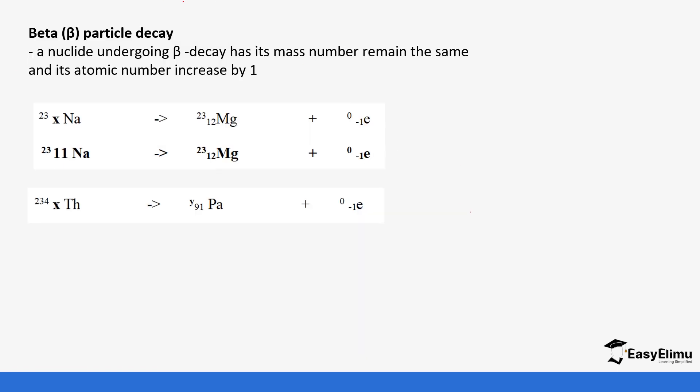Next we have the beta particle decay. For beta particle decay, a nuclide undergoing beta decay has its mass number remain the same but the atomic number is increased by 1. You can see the mass number of the beta particle. It behaves like an electron that is negatively charged. You notice when you take 23 plus 0, the mass number doesn't change. But now if you take 11 plus 1 you get 12 for the atomic number.